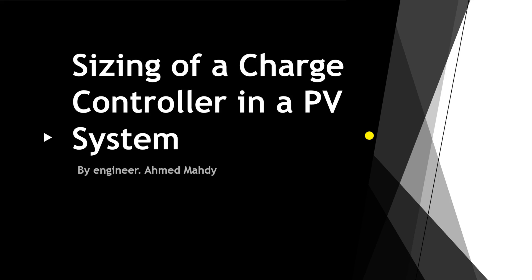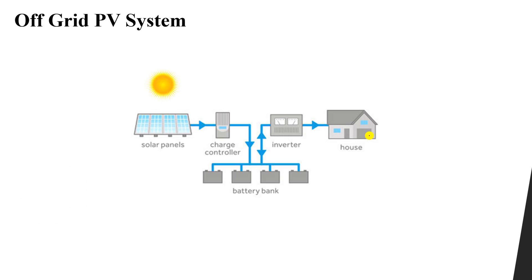Welcome to this lesson about charge controllers and how to size a charge controller in a PV system. In an off-grid system not connected to the electrical power grid, solar panels provide a certain power — for example, 7 kilowatts — which is supplied to a charge controller that regulates the charging of the batteries. In this lesson, we are concerned with understanding how to size or select a charge controller.